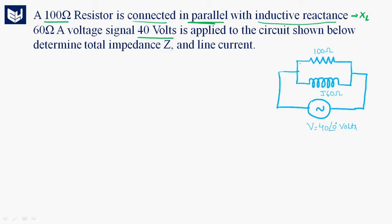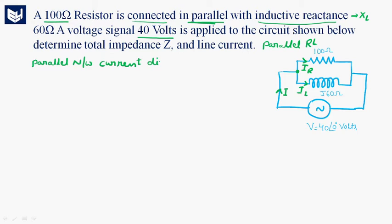Here we have a parallel RL combination. Let us assume this is the current flowing through the circuit, and at this point current division is taking place. One current is IR and another current IL is flowing through the inductor. In a parallel network, current division takes place but voltage is constant across each and every element.